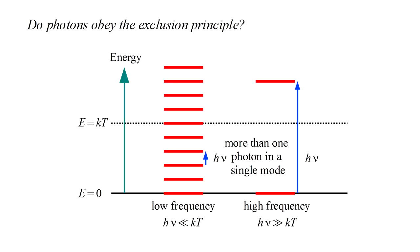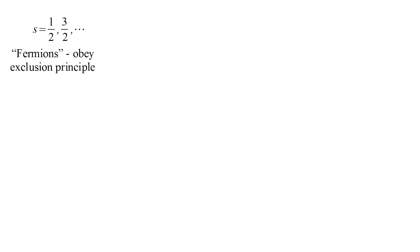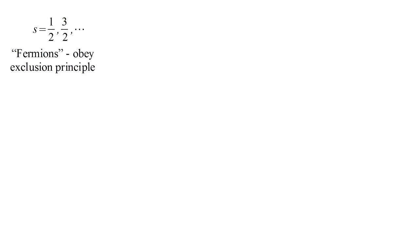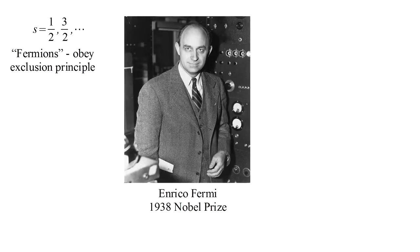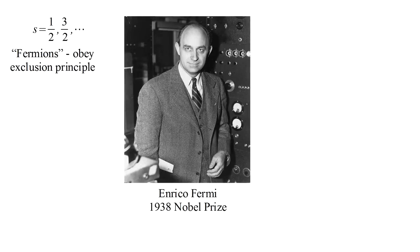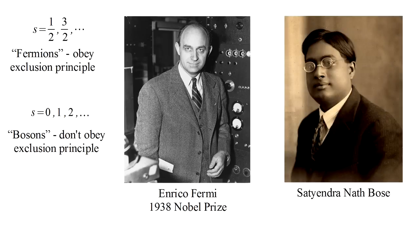In fact, electrons and photons are members of the two families to which all known particles belong. Particles with half-integer spin, such as the electron with spin one half, are fermions, named after Enrico Fermi, and obey the exclusion principle. Particles with integer spin, such as the photon with spin one, are bosons, named after Satyendra Nath Bose, and do not obey the exclusion principle.